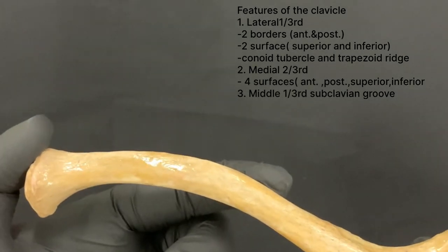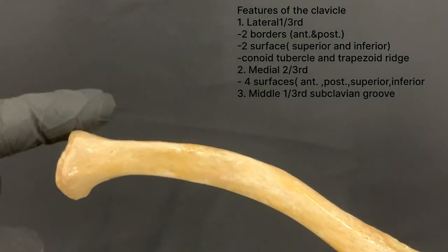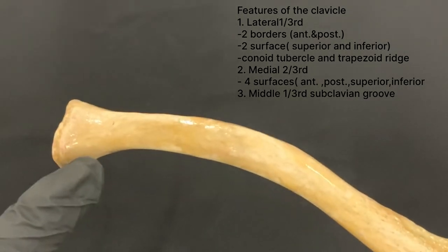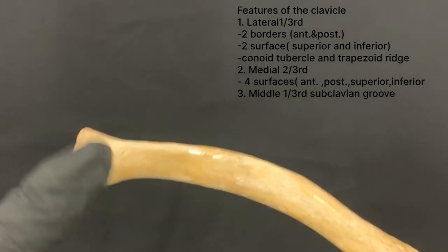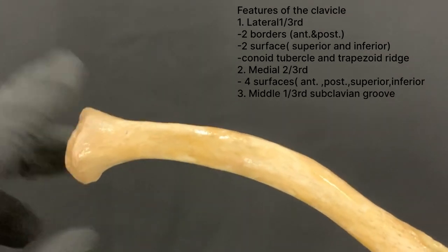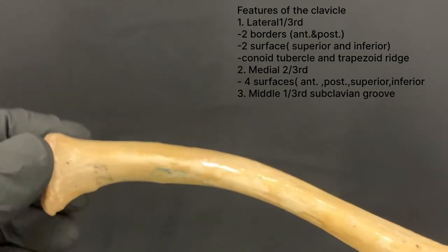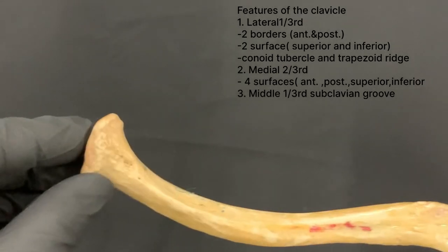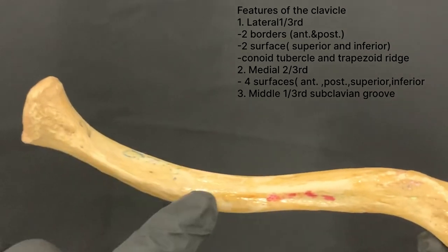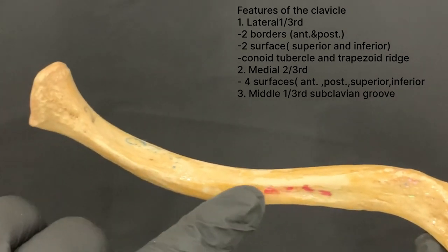The medial two-thirds of the shaft is rounded and has got four surfaces. The anterior surface is convex forwards. The posterior surface is smooth. The superior surface is rough in its middle part. The inferior surface has a rough oval impression at the medial end, and the lateral half of this surface has a longitudinal subclavian groove.